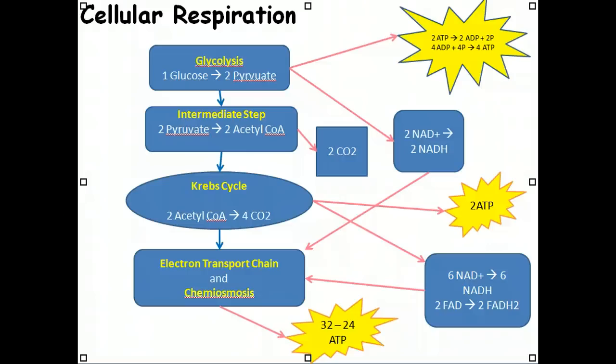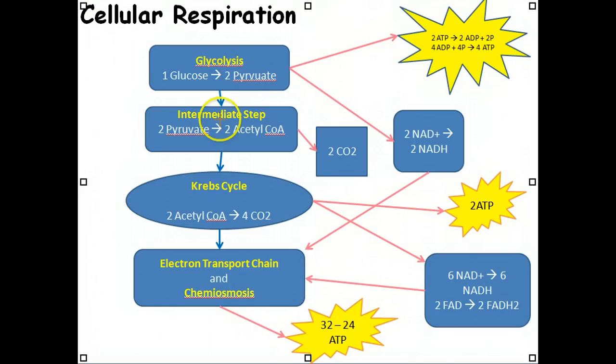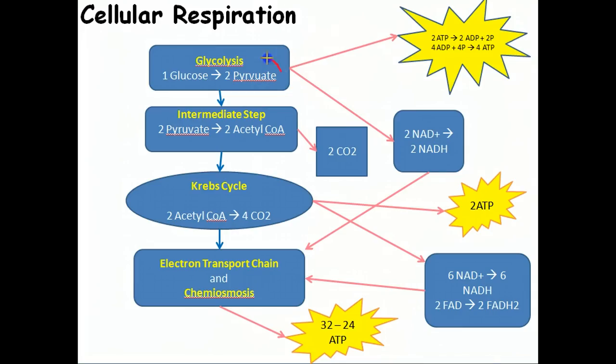In general, cellular respiration begins when glucose enters the glycolysis pathway. It exits and forms two molecules of pyruvate. But in the process, it's going to use some ATP, then ultimately generate two molecules of ATP.